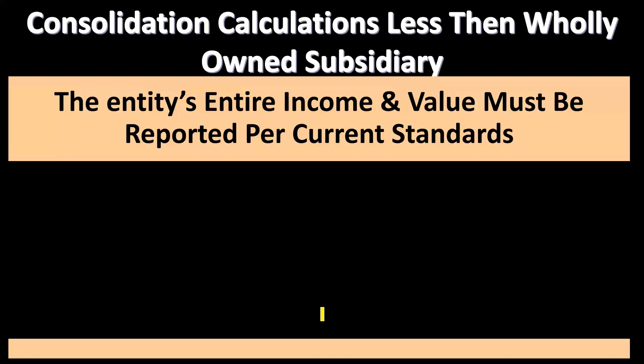Consolidation calculations for less than wholly owned subsidiaries. The entity's entire income and value must be reported per the current standards. We might think that on the income statement we would just report the part of the subsidiary that belongs to or is controlled by the parent, but that's not typically the case under generally accepted accounting principles — they want to see the entire subsidiary reported.